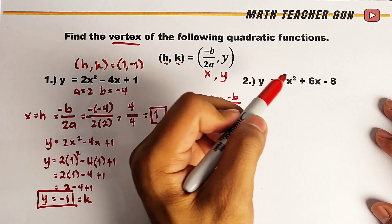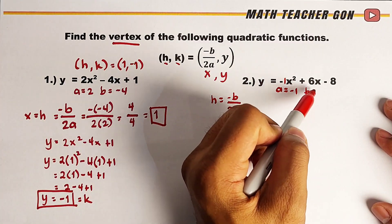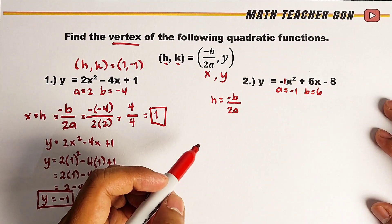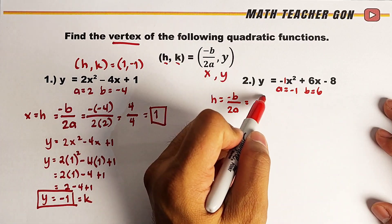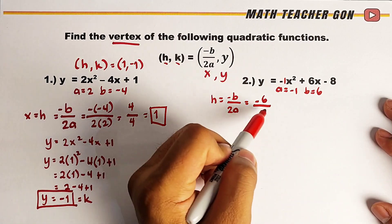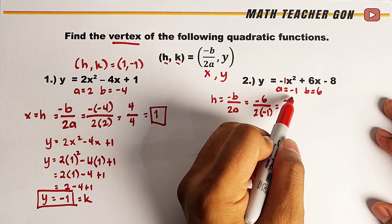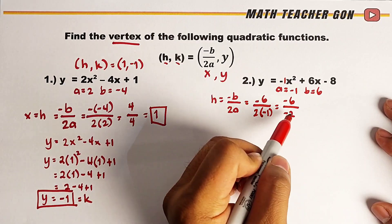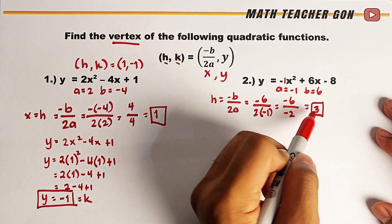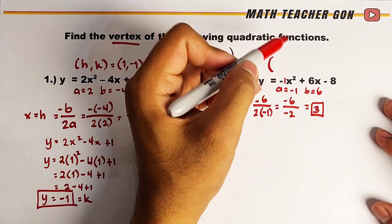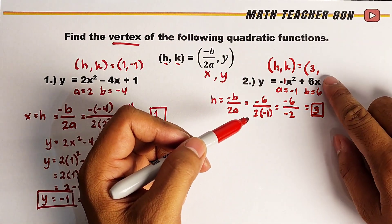First, identify the values: a is negative 1 and b is equal to 6. Let's substitute the values — negative b is negative 6, over 2 times a which is negative 1, giving negative 6 over negative 2. The correct answer is 3. This is now the value of h. So as for the vertex (h, k), it would be (3, k).